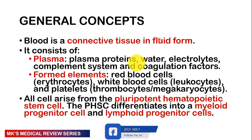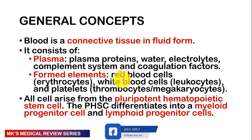Remember that blood is pretty much connective tissue found in fluid form. It consists of plasma and formed elements. The plasma is made up of plasma proteins, water, electrolytes, a complement system, as well as coagulation factors. The formed elements are your red blood cells or erythrocytes, white blood cells or leukocytes, and platelets or thrombocytes. All these formed elements arise from a special type of stem cell known as a pluripotent hematopoietic stem cell — any cell that has the ability to give rise to many different cell lineages while maintaining its own population.